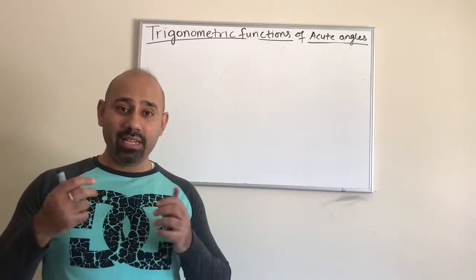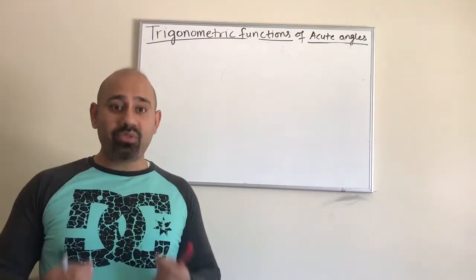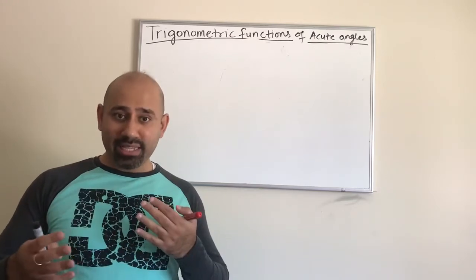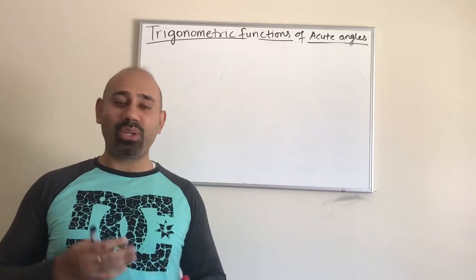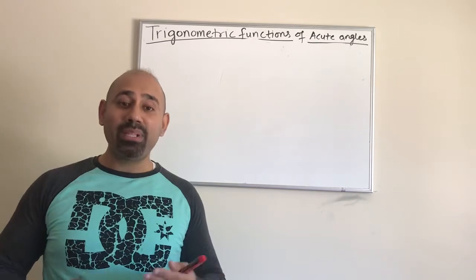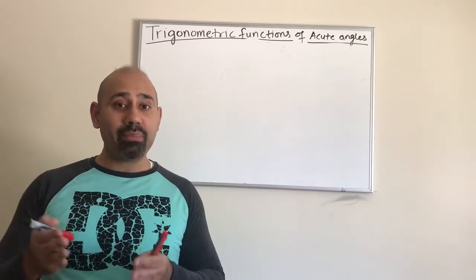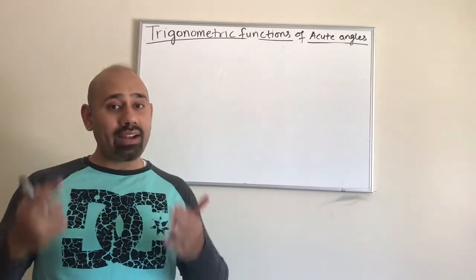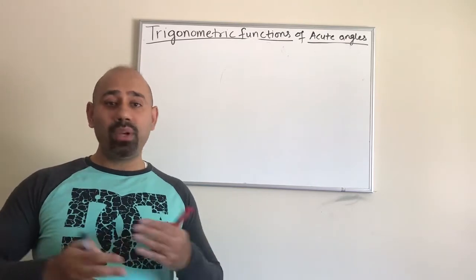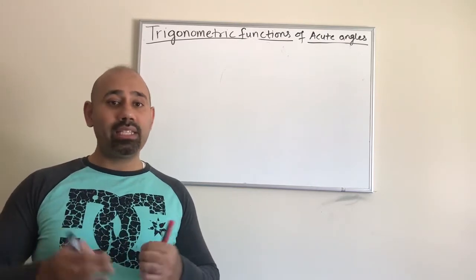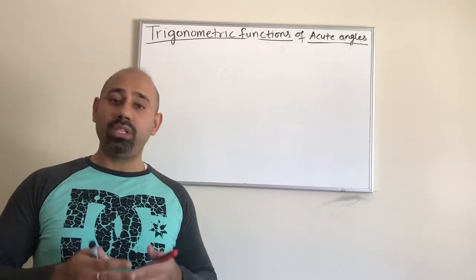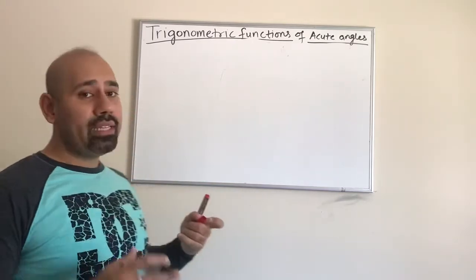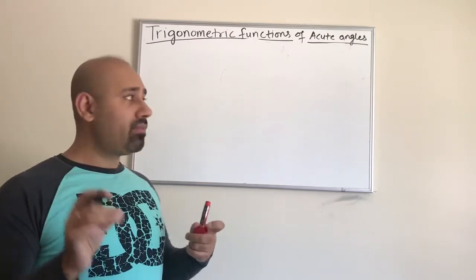In this video I want to formally write the six trig functions or trig ratios, and then we are going to use them to solve many different types of examples in a right triangle. Keep in mind right now we are confining ourselves to only acute angles in the right triangle, and then once we understand these things we are going to talk about trig functions for any type of angle. So let us formally define the six trig ratios or trig functions.